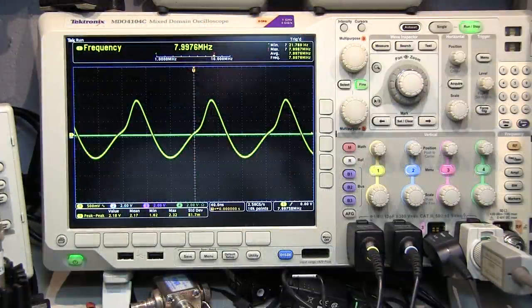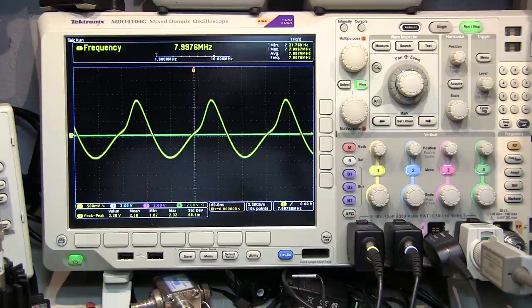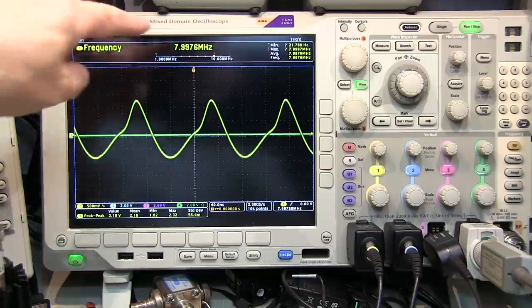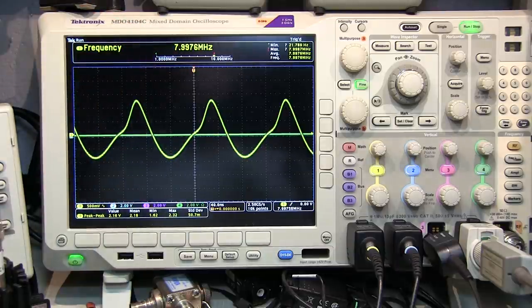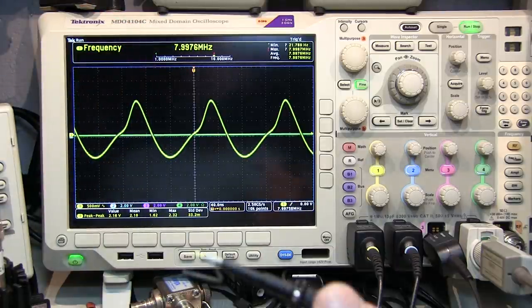Channel 1 of the scope is looking at the output of this crystal oscillator, which is coming from an emitter follower buffer. We can see that the frequency of the oscillator is 7.9976 megahertz, and the amplitude is around a little over 2 volts peak to peak.